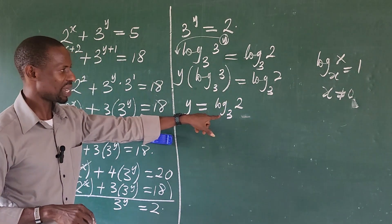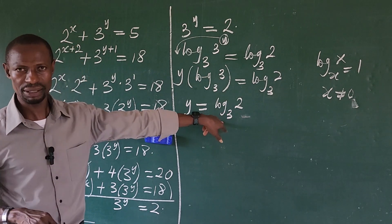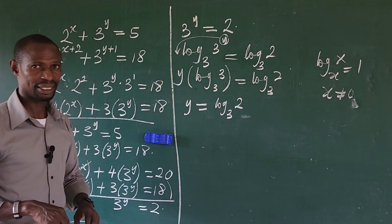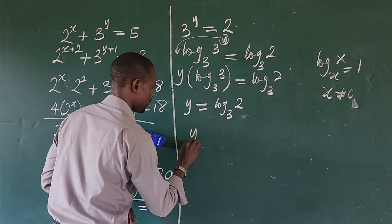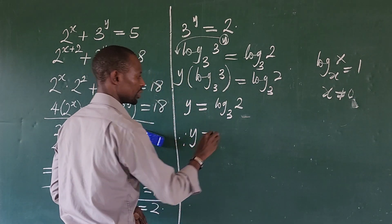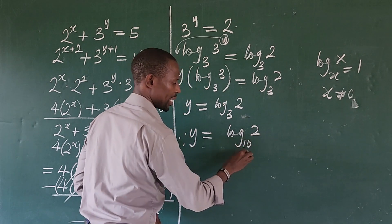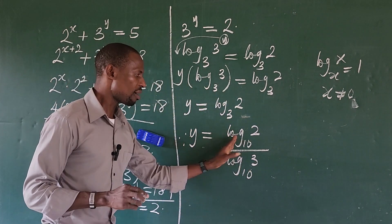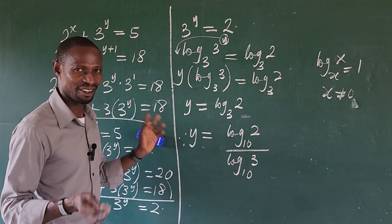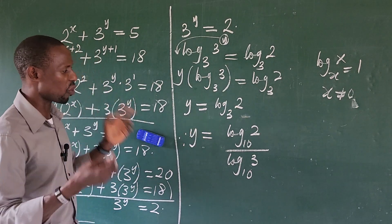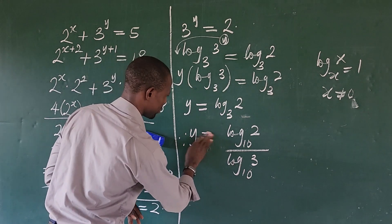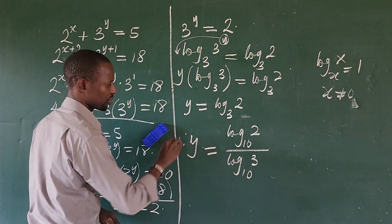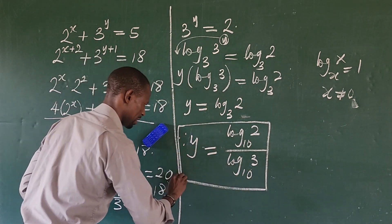We can leave the answer as log base 3 of 2, or we can convert to base 10 using the change of base law. Therefore, y equals log 2 base 10 divided by log 3 base 10.